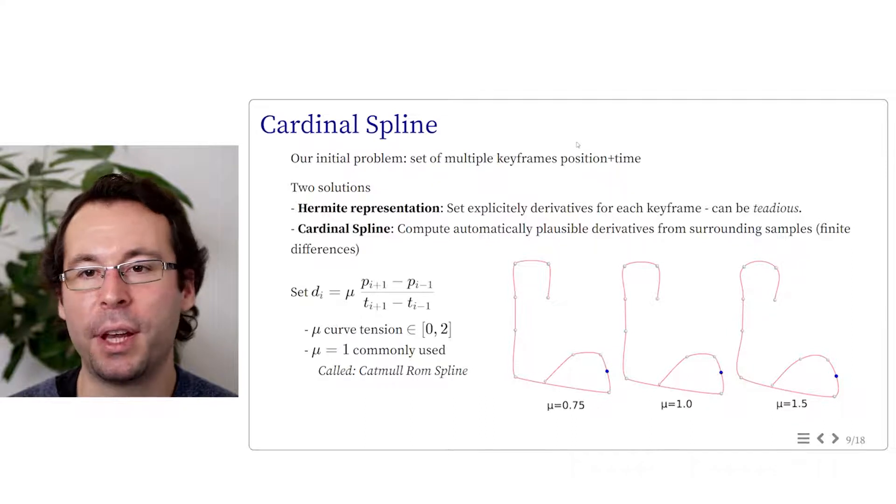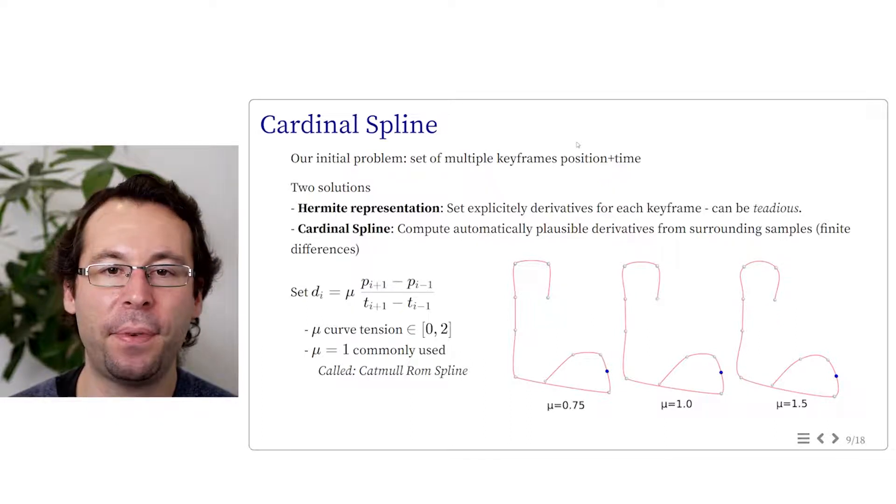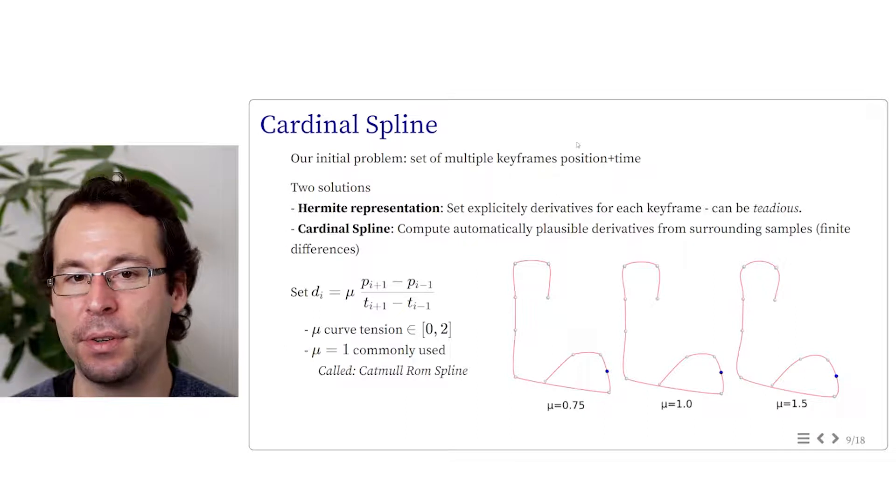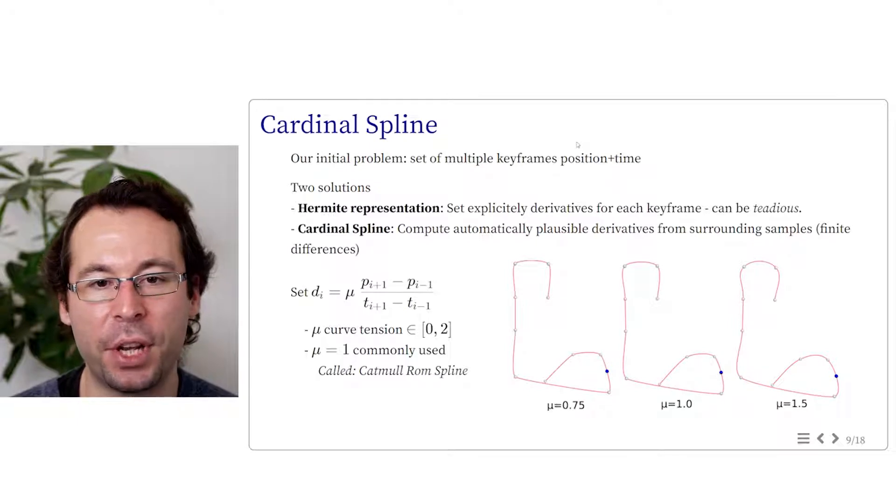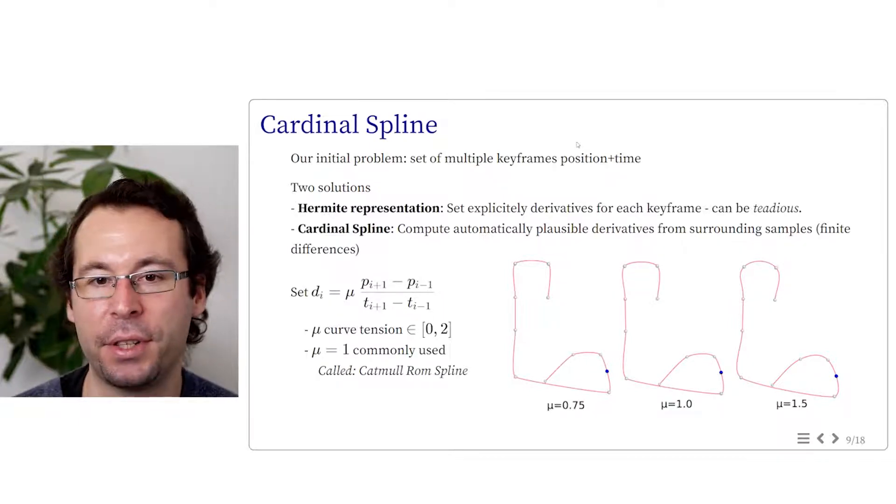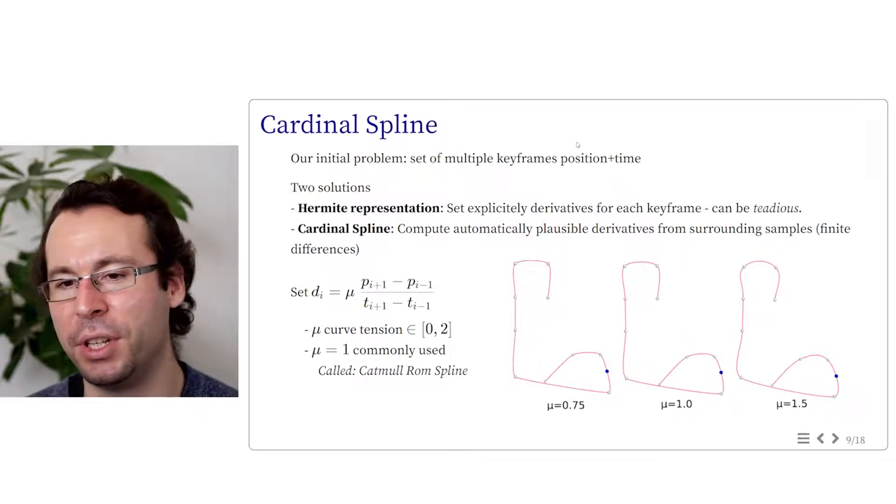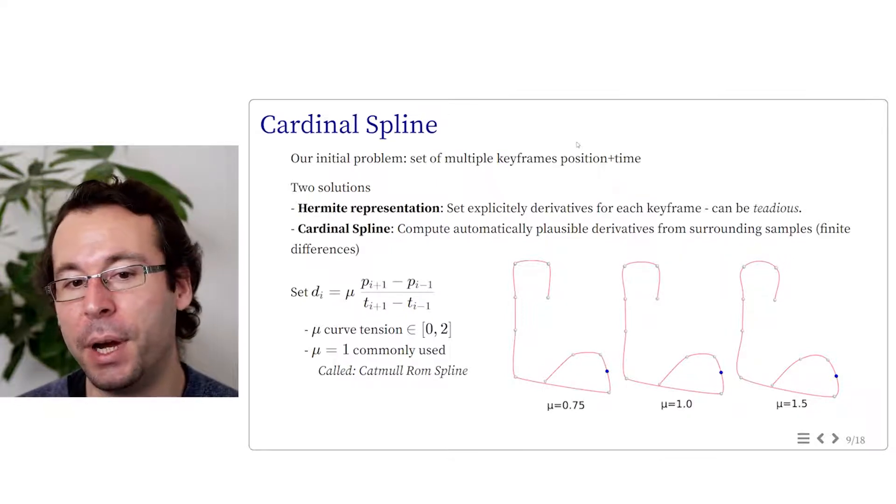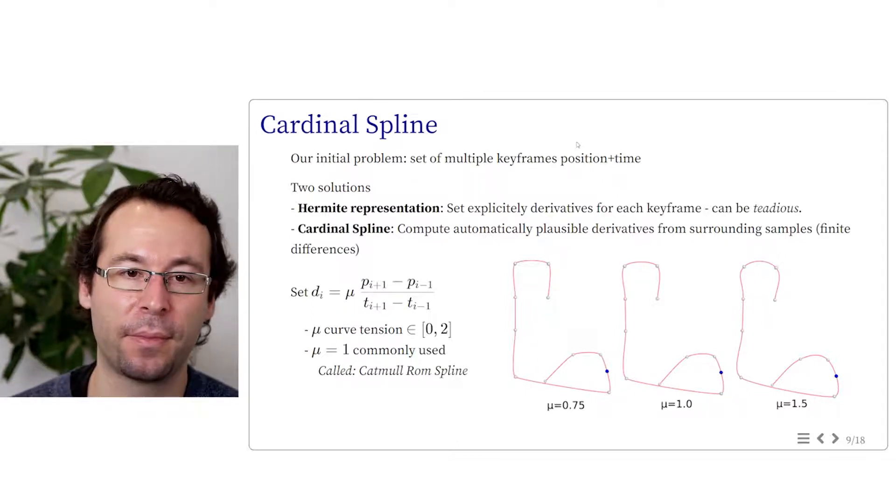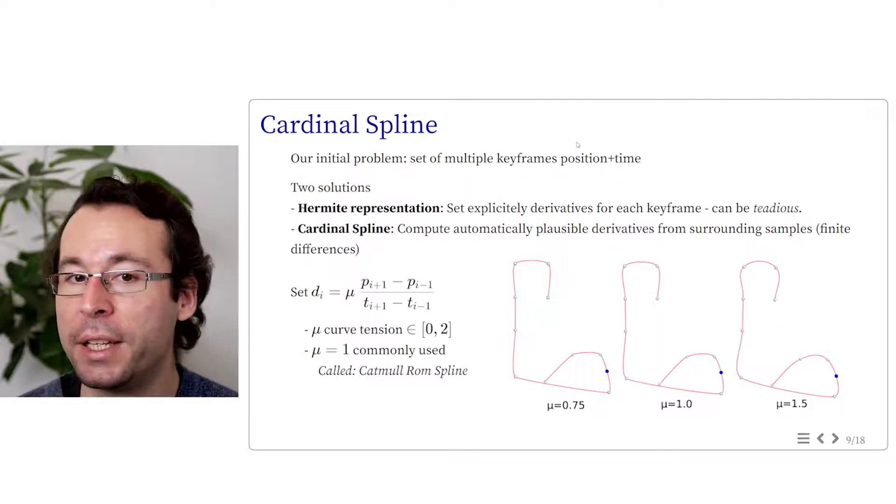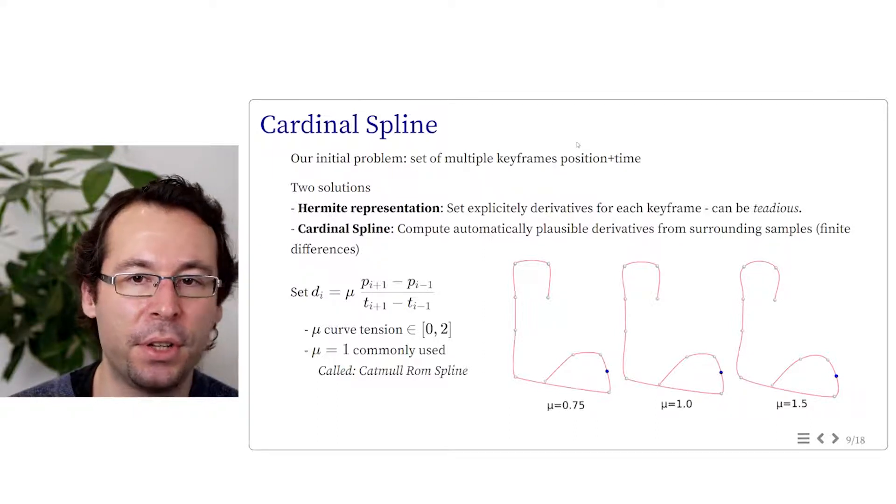So now we have a way to interpolate between points and derivatives. But if we go back to our original problem, we had only defined points and not the derivatives. So there is now two possibilities. Either we ask to provide a derivative for the key position, and this leads to the Hermit representation. Defining the derivative can be hard and non-intuitive, especially in 3D. But this is usually a possibility which is provided by common animation tools that let you play with both position and derivatives. The other solution is to compute automatically some plausible derivatives, typically using surrounding samples using, for instance, finite differences.